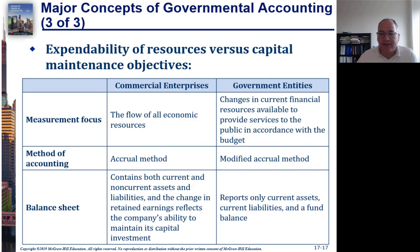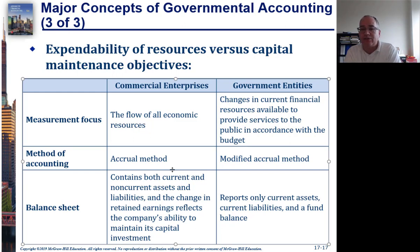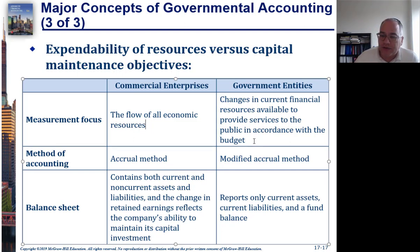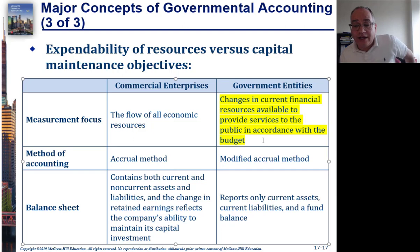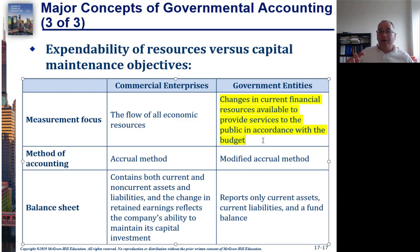We have the idea of expendability. For a commercial enterprise, we're interested in all economic resources and we use the accrual method — the balance sheet includes everything. But governmental entities are focused on the expendability of resources — specifically, changes in current resources available to provide services to the public in accordance with the budget. The key question is: how much money is there in the budget? An all-economic-resources approach would not work because governmental entities are primarily focused on cash coming in and going out.